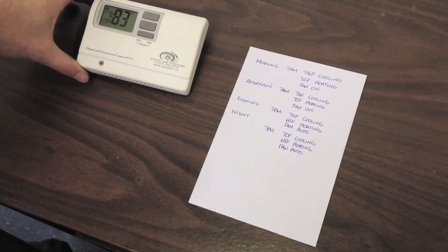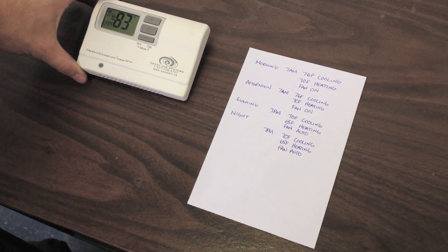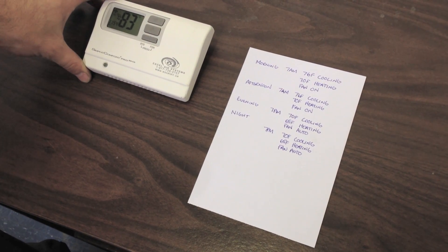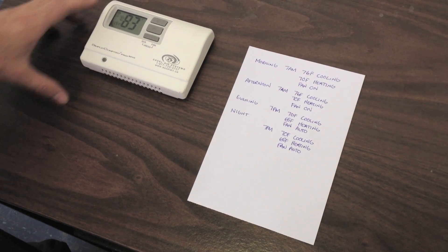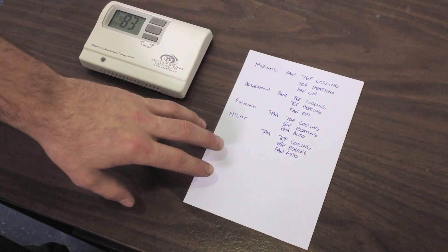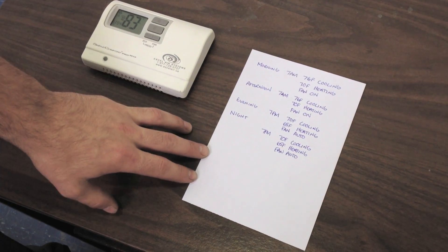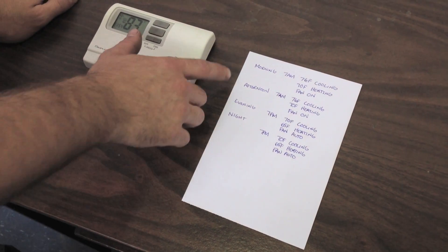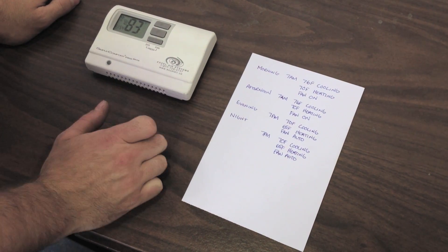Step one for programming the Simple Comfort Pro 5.010 Accel Air Systems Thermostat is to actually go to the pen and paper and write down what you want for a schedule. So, there are four available schedules per day.